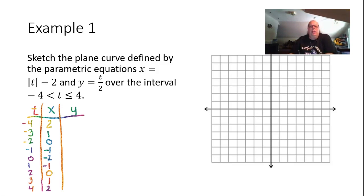Now we're going to do our last column, the y column. We're going to plug our t values into t divided by 2. So negative 4 divided by 2 is negative 2. Negative 3 divided by 2 is negative 1 and a half. Negative 2 divided by 2 is negative 1. Negative 1 divided by 2 is negative one half. 0 divided by 2 is 0. 1 divided by 2 is positive 1 and a half. 2 divided by 2 is positive 1. 3 divided by 2 is positive 1 and a half. And 4 divided by 2 is 2.